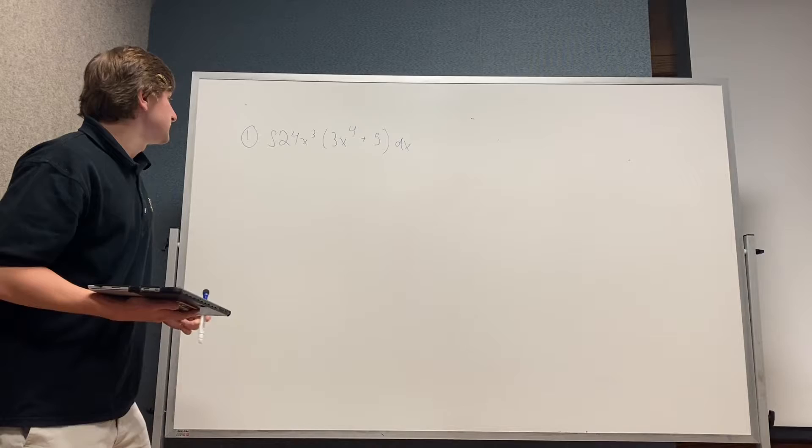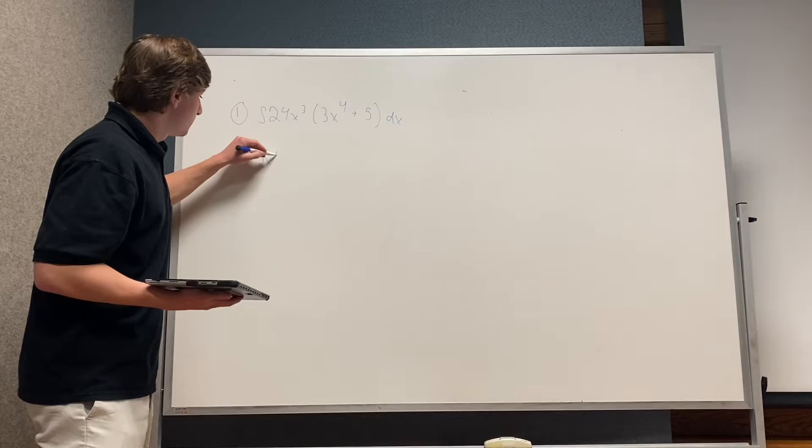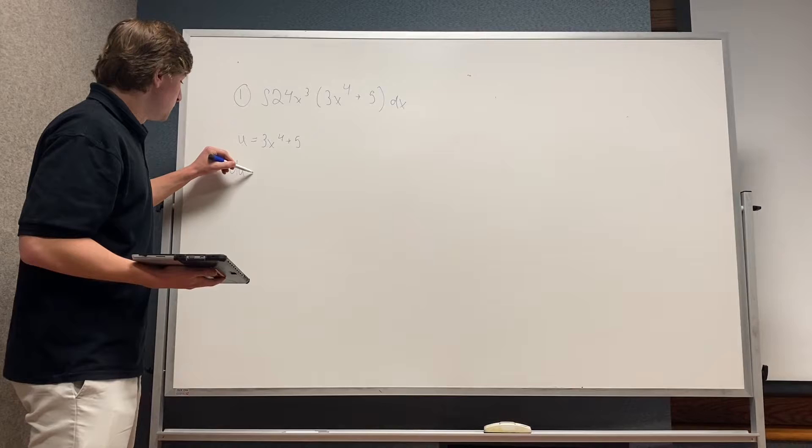Alright, so first you're going to want to find the u, and that's what's in the parentheses. So u equals 3x to the 4th plus 5, and then you're going to want to find the derivative of u.